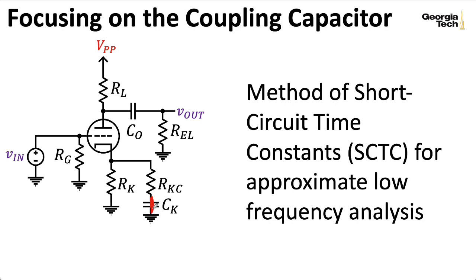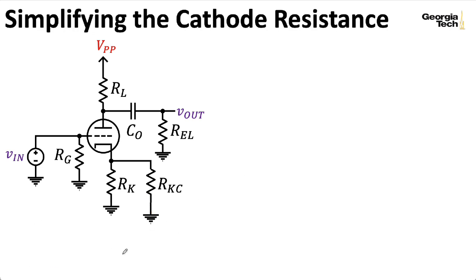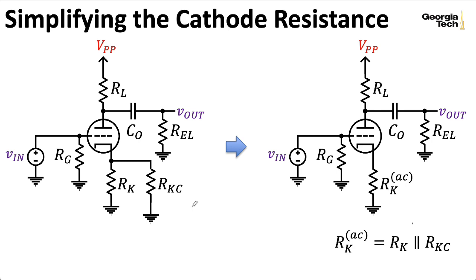A little bit later, I'll hand wave to try to motivate this approach a little bit. So since I've shorted out CK, I can replace RK in parallel with RKC with its parallel combination, which I'll call RK with a superscript AC, and this is a notation that I used in a previous lecture. And in that previous lecture, I think at some point I actually dropped the superscript AC notation. Here I'm going to keep it because we'll do some derivations over the next couple of days where making the distinction between RK and RKC, and RK superscript AC will be helpful.